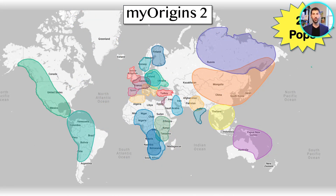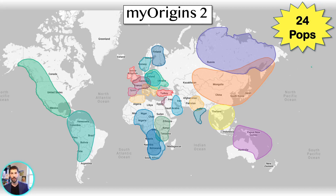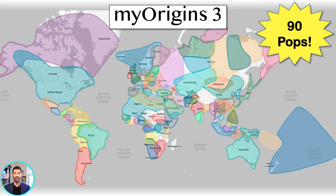Let's look at the previous MyOrigins 2 map. Previously, if you bought a FamilyFinder kit, your map would include one or more of these 24 populations. You can see that most of the world is included, but there are many gaps — for example, in West Asia — and many populations are very general, spanning entire continents. Comparing that to our new MyOrigins 3 map, this is a staggering increase in population count from 24 to 90, a three-fold increase. This kind of granular look at your ancestry is really unparalleled in the major direct-to-consumer genetic testing market.